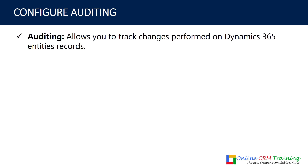Auditing means that if you want to keep track of all the changes that anybody is doing on a particular field on a form, you can track that. If somebody updates the value of a field, you will know the old value, the new value, who changed it, and when it was changed. Those things you can know through the auditing process.